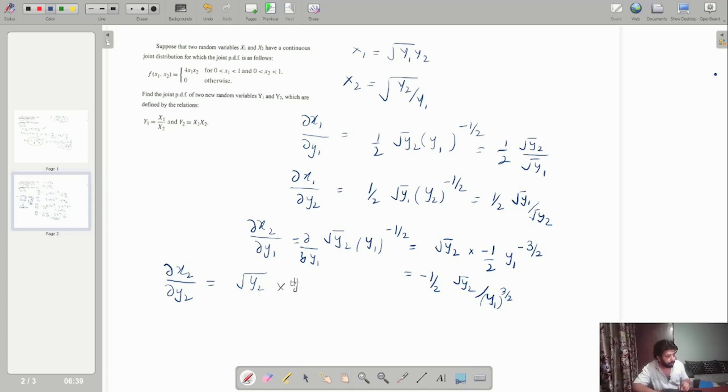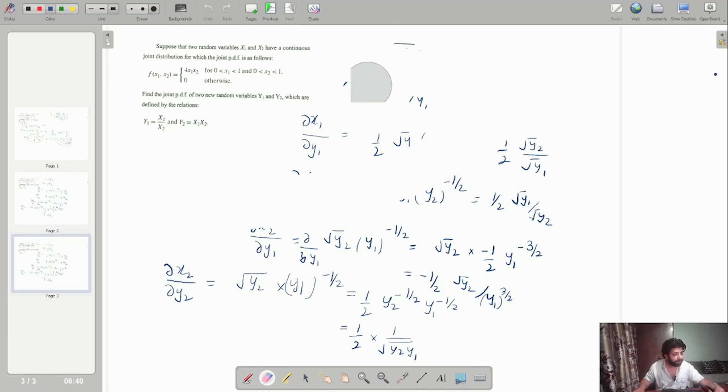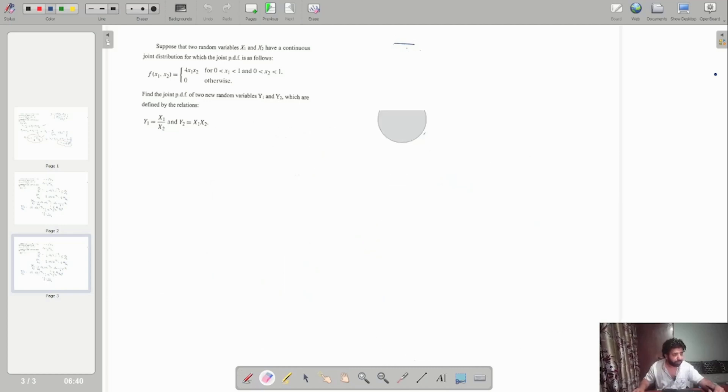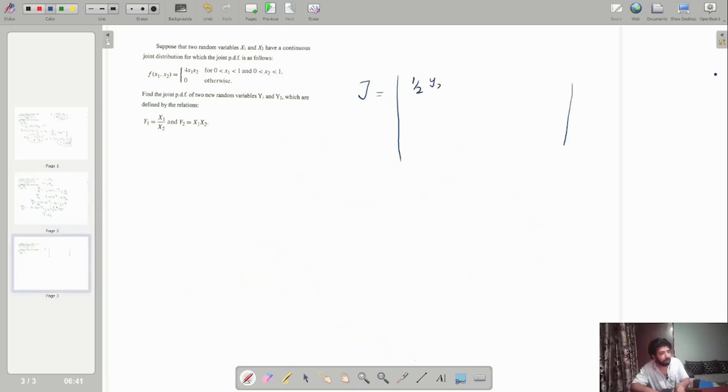In this case I will have y2 multiplied by y1, with y2 raised to minus half and y1 raised to minus half, which will give me 1 over 2 times the square root of y2 over y1. So now that we have the values, we have to actually find the Jacobian determinant for the inverse transformation. So let's add a new board and form the Jacobian determinant here.